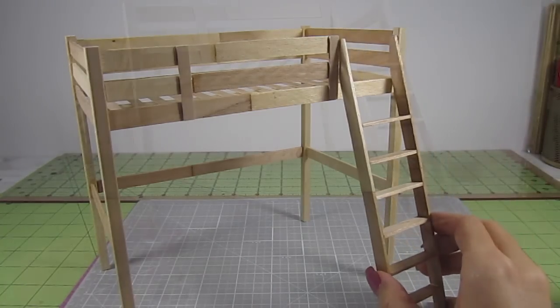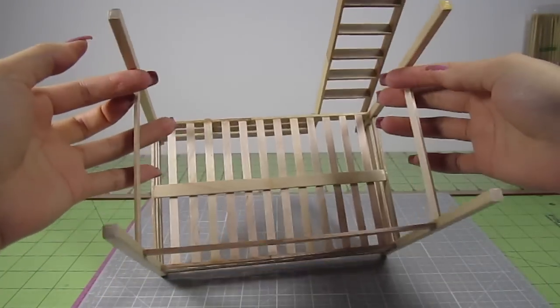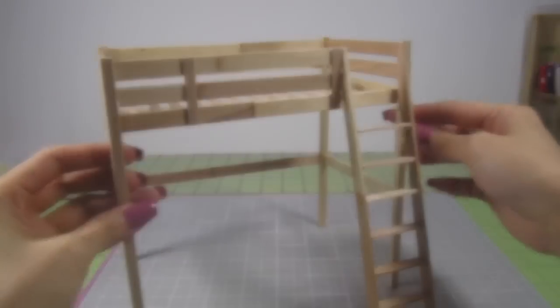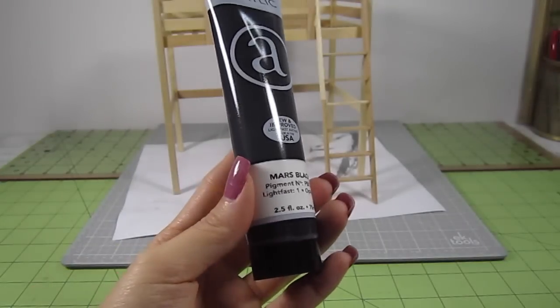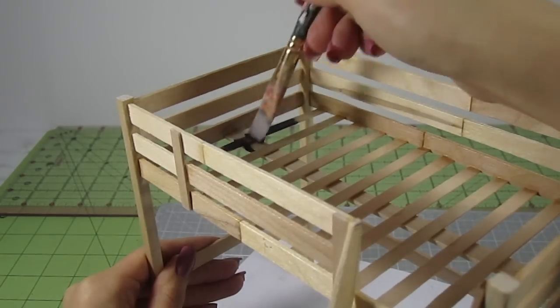Now you can glue the ladder in place. Look how nice that looks. I'm going to paint this bed black so it stands out in a white room. I'm just using some black acrylic paint.